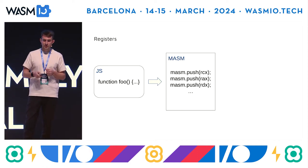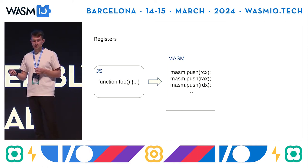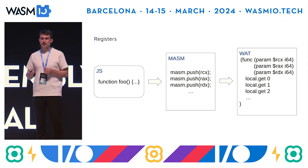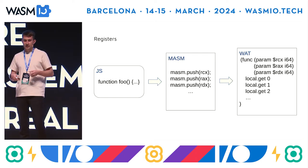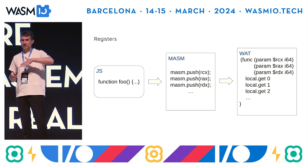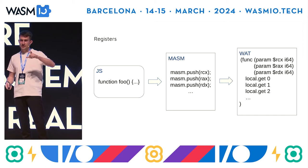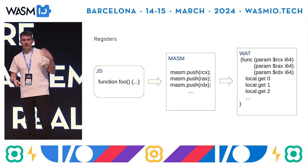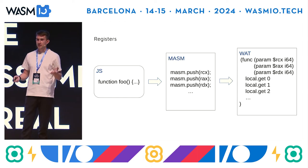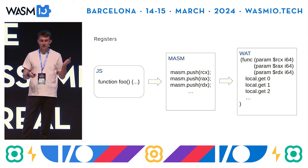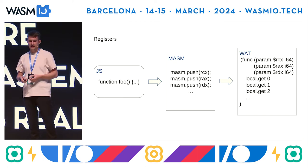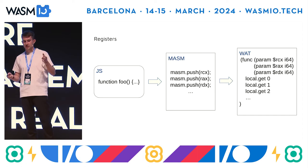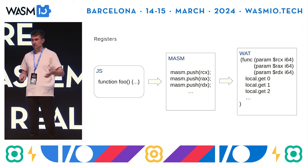We can have a direct mapping from macro assembler to WebAssembly registers. When we compile JavaScript into the macro assembler, it uses registers. We experimented a lot with how to represent them inside WebAssembly and came up with the idea of representing registers as parameters of a function. Each time when we call a function inside WebAssembly, we pass this set of fixed parameters that represent registers.